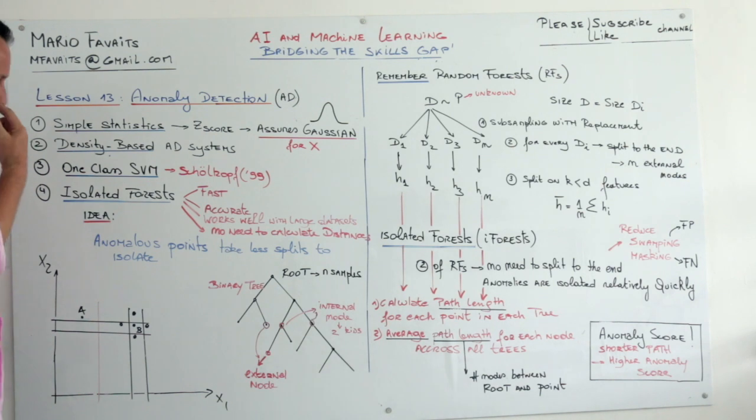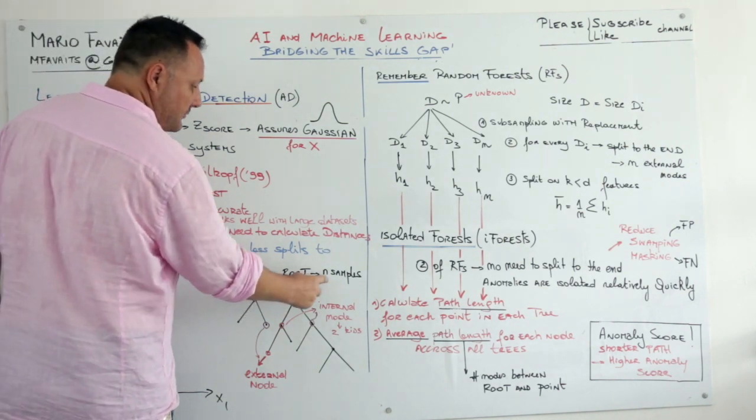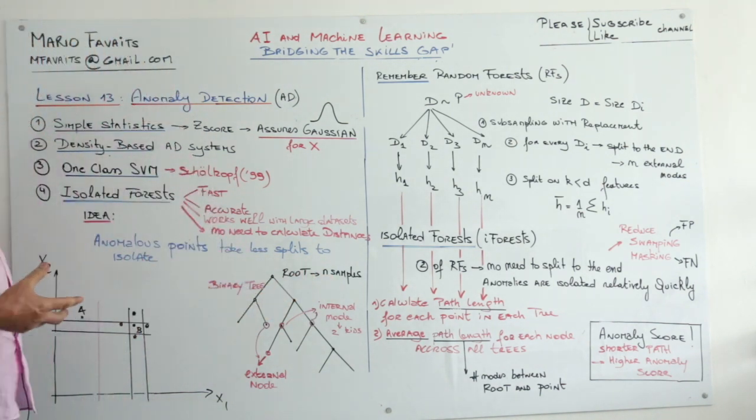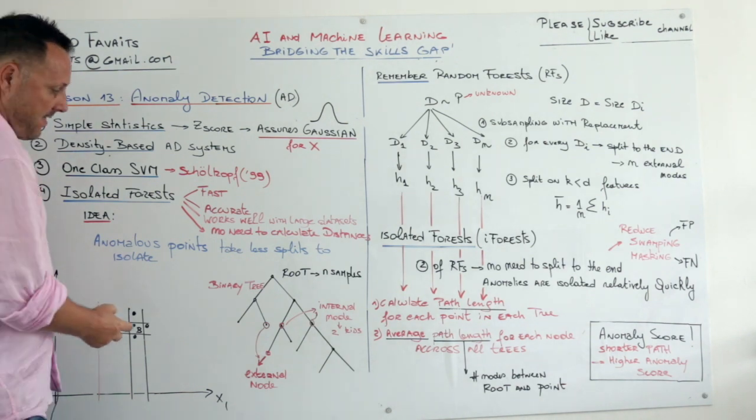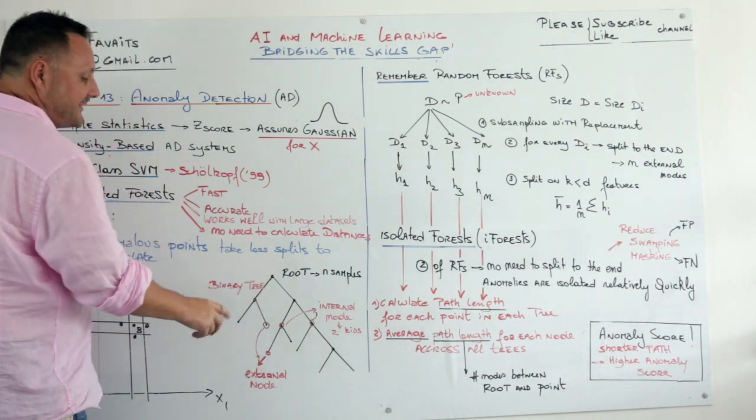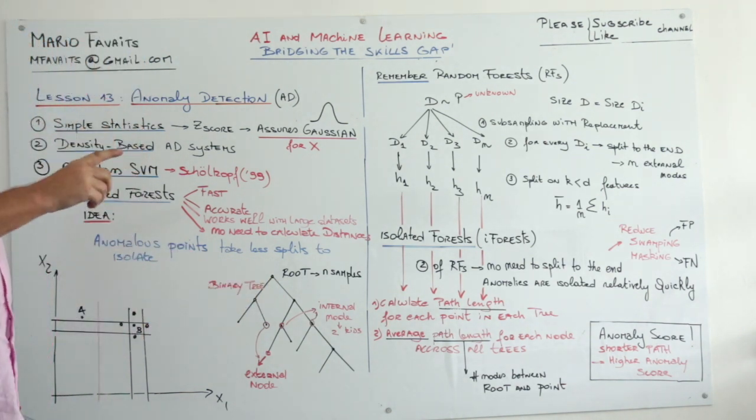Just for you to remember, this is a tree. We call this the root. The root starts with N samples. And then it's a binary tree because you have a left and a right.